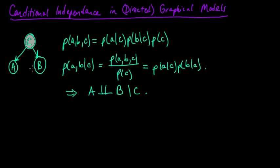So when we have a graphical model that looks like this, we know that A and B are conditionally independent given C. Let's call this case one, and we might refer to this as a tail-to-tail relationship. The arrows going to A from C and to B from C are tail-to-tail at node C, where this is the tail end of the edge and this is the head of the edge.